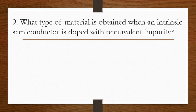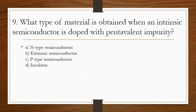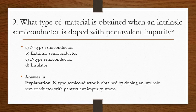Question 9: what type of material is obtained when an intrinsic semiconductor is doped with a pentavalent impurity? The answer is A. N-type semiconductor is obtained by doping an intrinsic semiconductor with pentavalent impurity atoms.